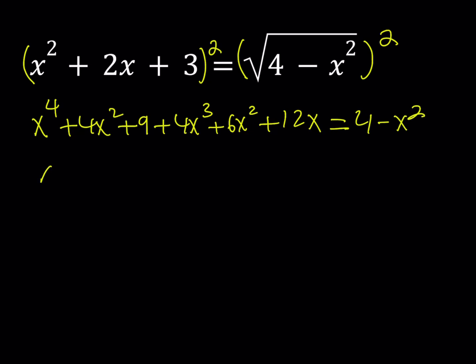If you put everything on the same side you get x to the 4th plus 4x cubed plus 11x squared, and of course you need to combine like terms, plus 12x plus 5 equals 0. Now this is a quartic equation and there is a formula, there is a cubic formula that you can use for solving the quartic, but that's quite complicated. So this is not the best approach obviously.